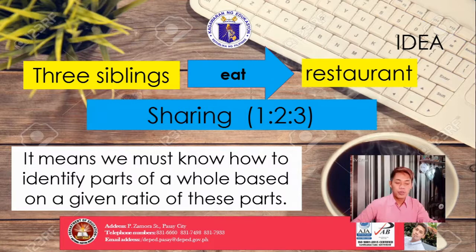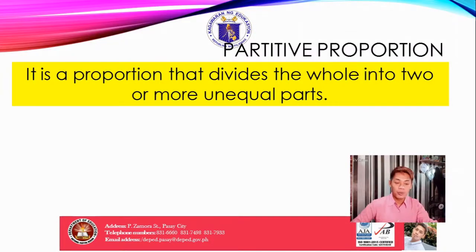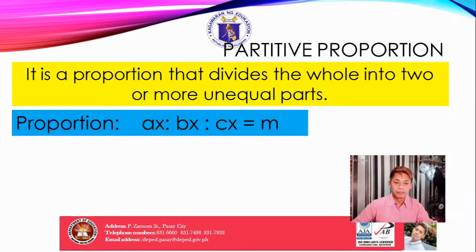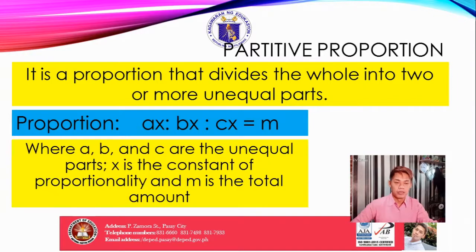Let us start with what is partitive proportion. It is a proportion that divides the whole into two or more unequal parts. For the proportion, it is written in a given equation: AX is to BX is to CX is equal to M. Where A, B, and C are the unequal parts, X is the constant of proportionality, and M is the total amount — what has been described as a whole.